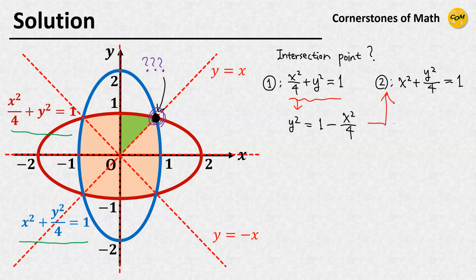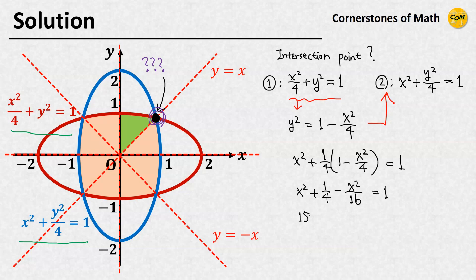Substituting this into the second equation eliminates y, and we have x squared plus 1 quarter times (1 minus x squared over 4) equals 1. So x squared plus 1 quarter minus x squared over 16 equals 1, which gives 15 over 16 times x squared equals 3 quarters, so x squared equals 4 over 5.